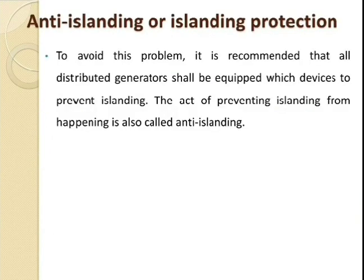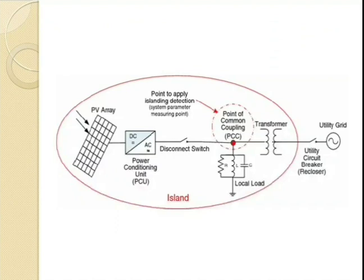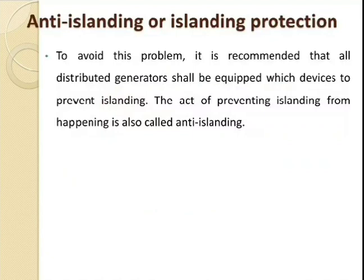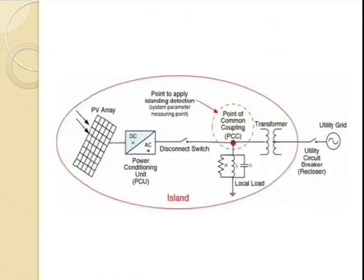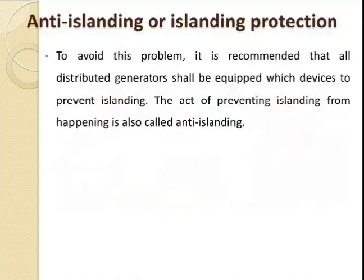The second concept is anti-islanding, or islanding protection. In the previous condition we discussed how to protect the distributed generator as well as the grid, which is considered as the anti-islanding condition. Anti-islanding is considered as supplying the power to the load side while trying to protect the grid as well as the distributed generator.